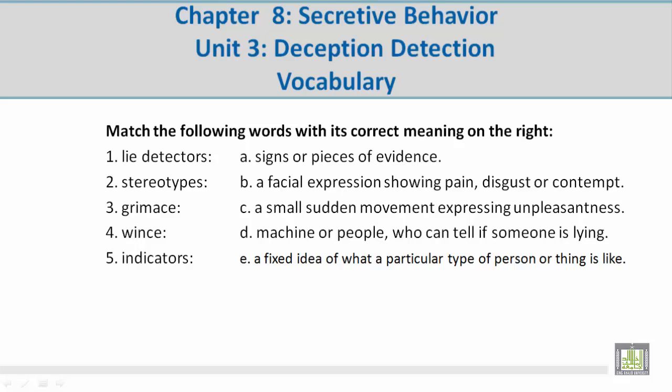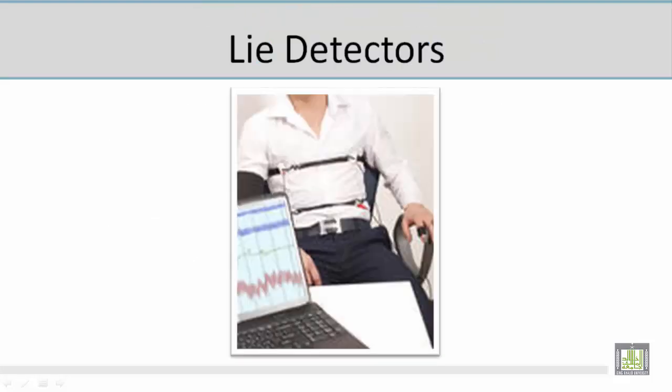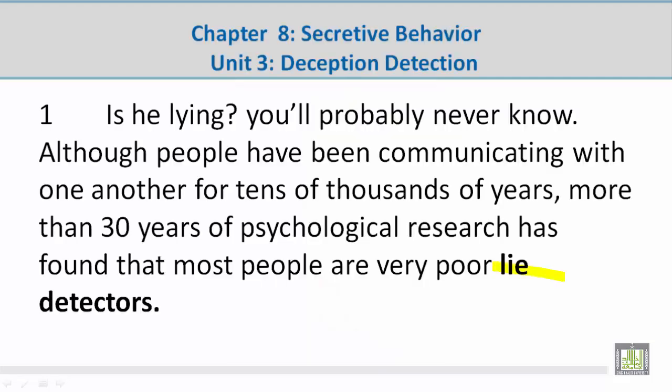Match the following words with the correct meaning on the right. Number 1: Lie detectors. Mohamed, please give us the correct meaning. D — machines or people who can't tell if someone's lying. Let's take a look at a picture related to the vocabulary word 'lie detectors.' In this picture, I see a man and there is a machine on him to tell whether he's lying or telling the truth — that is what a lie detector is for. The sentence reads: more than 30 years of psychological research has found that most people are very poor lie detectors.